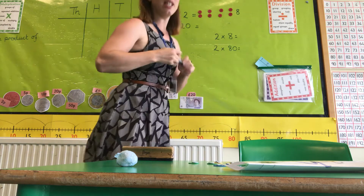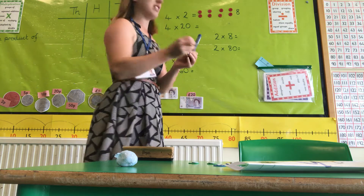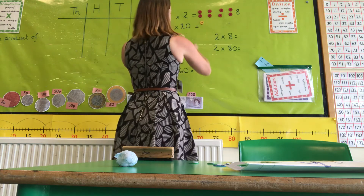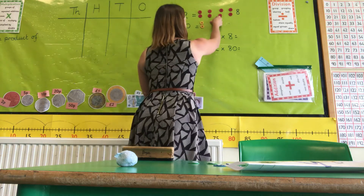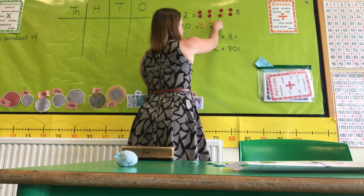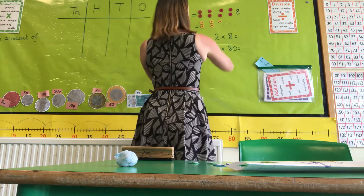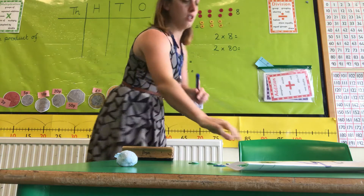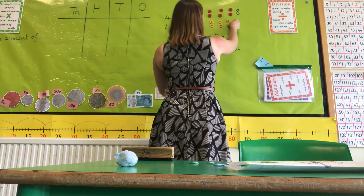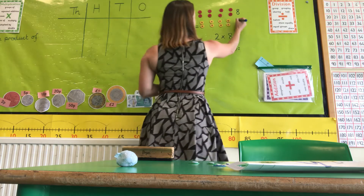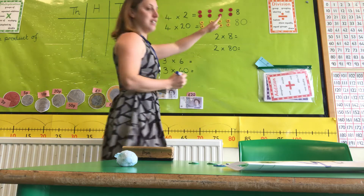Now if I did the same but this time with 10s — because 20 is a multiple of 10 — this time I'm going to have 4 groups and each group is going to have 20. So I've got 20, 40, 60, 80. So if 4 times 2 is 8, then 4 times 20 is 80.